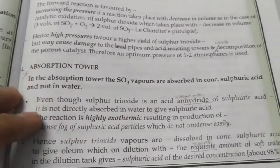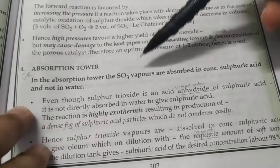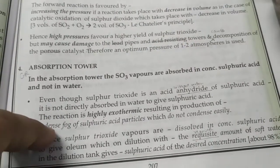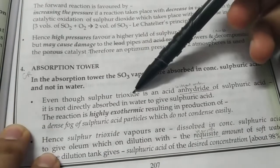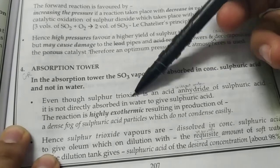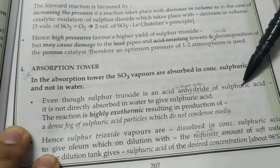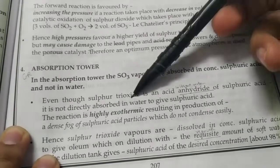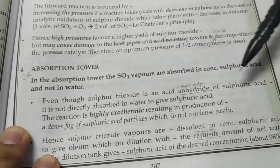There's a good reason why sulfur trioxide vapors are absorbed first in conc sulfuric acid and not directly in water. Sulfur trioxide is the anhydride, means without water, of sulfuric acid. If you add water to it, it forms sulfuric acid. If you remove all the water from sulfuric acid, you get sulfur trioxide.